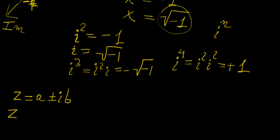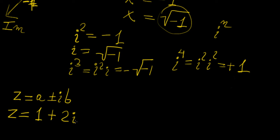A complex number may look like this: 1 plus 2i. The interesting thing is that you can never add these two parts together, because one is a real number and the whole second term is an imaginary number. However, you can consider this as the components of a vector in two dimensions — the real part and the imaginary part are on axes that are perpendicular to each other.